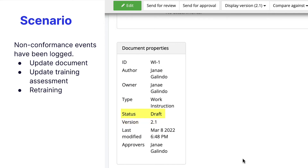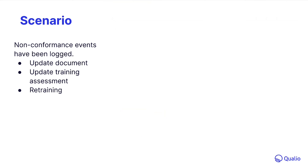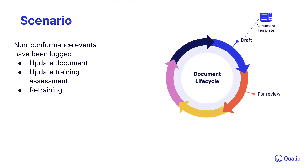Note that we're back in draft status, which means we've started the document lifecycle all over again. We'll need to send it for review to the reviewers and then for approval to the approvers, just like we did the first time when we created the document. And finally, make the document effective and send it to trainees for training. Qualio will not allow you to make the document effective without these control measures being satisfied.